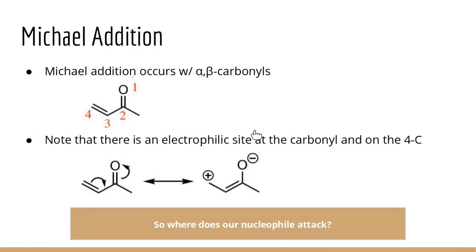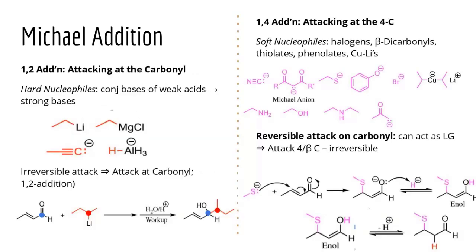Michael addition is a special nucleophilic reaction involving alpha-beta unsaturated carbonyls, where there's a double bond between the alpha and beta carbon. When we have an enolate, we see two major electrophilic sites: one at the beta carbon (position 4) and one at the carbonyl carbon (position 2). The question is whether the nucleophile undergoes 1,2-addition (at carbonyl) or 1,4-addition (at the beta carbon).